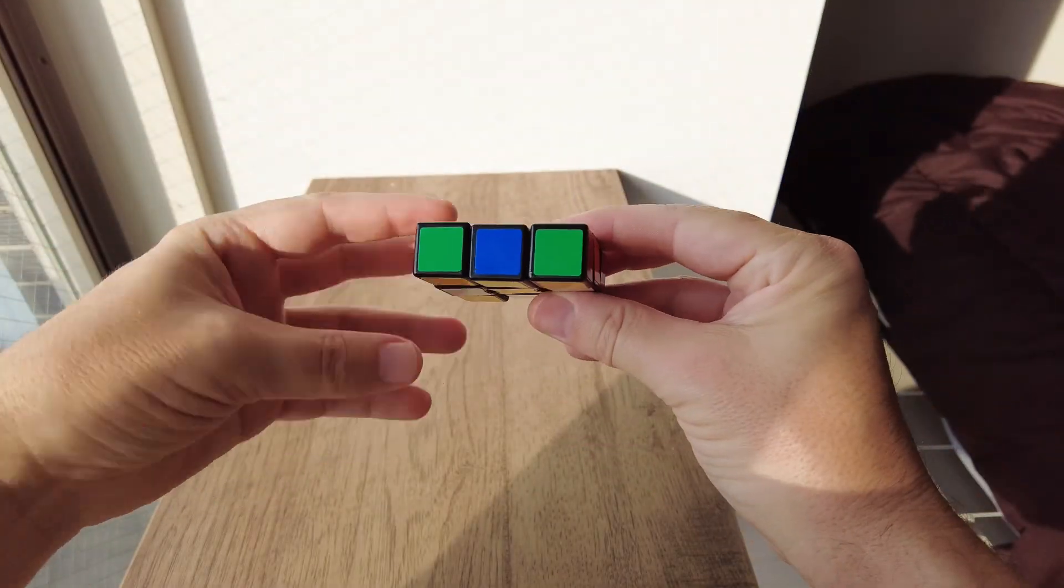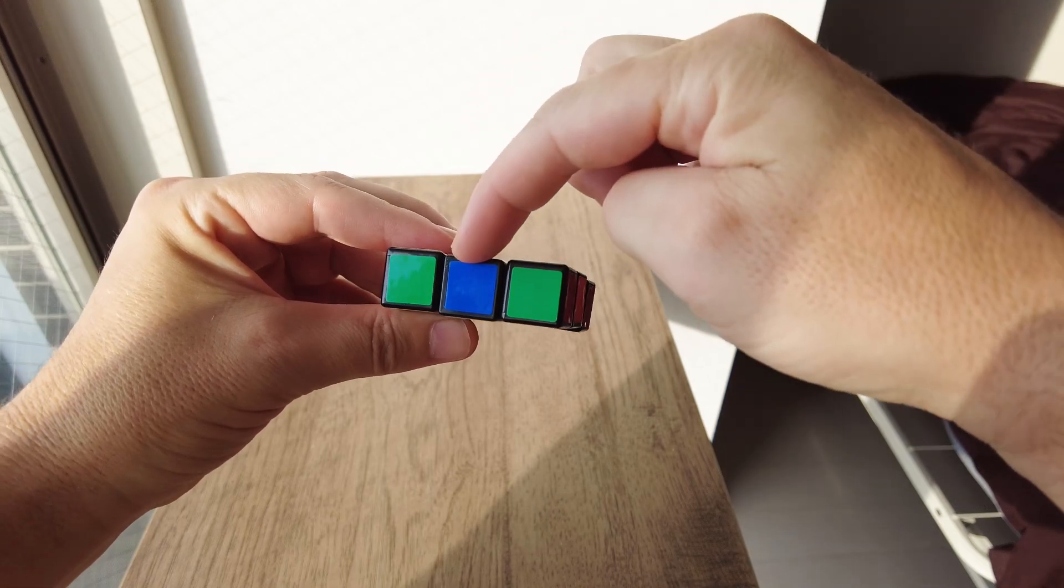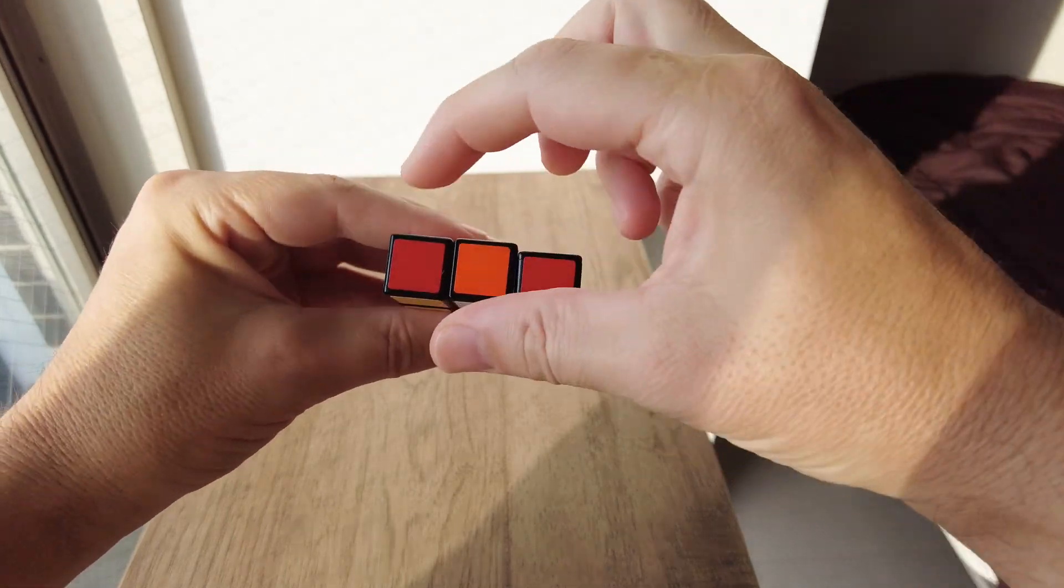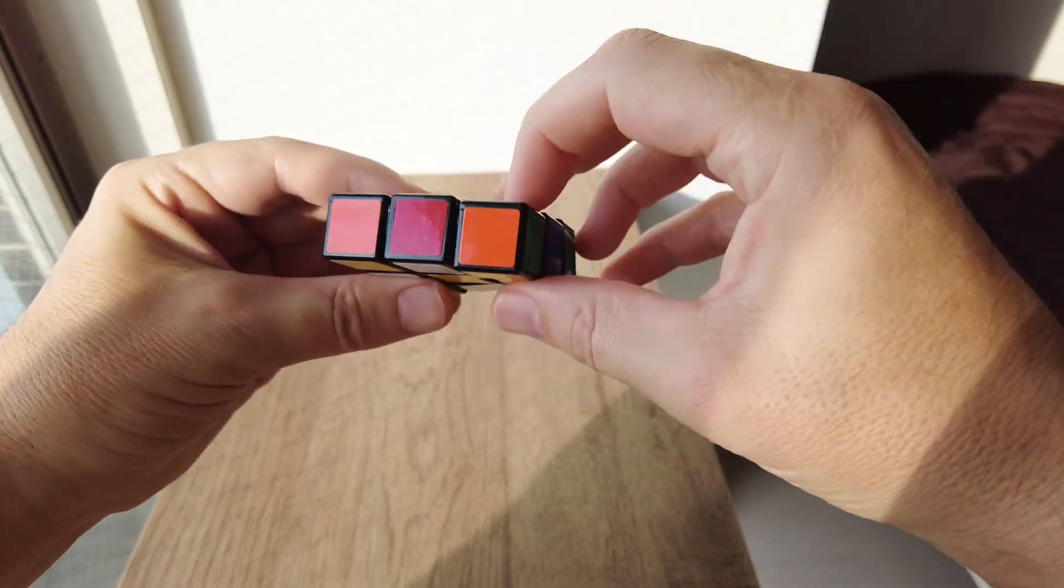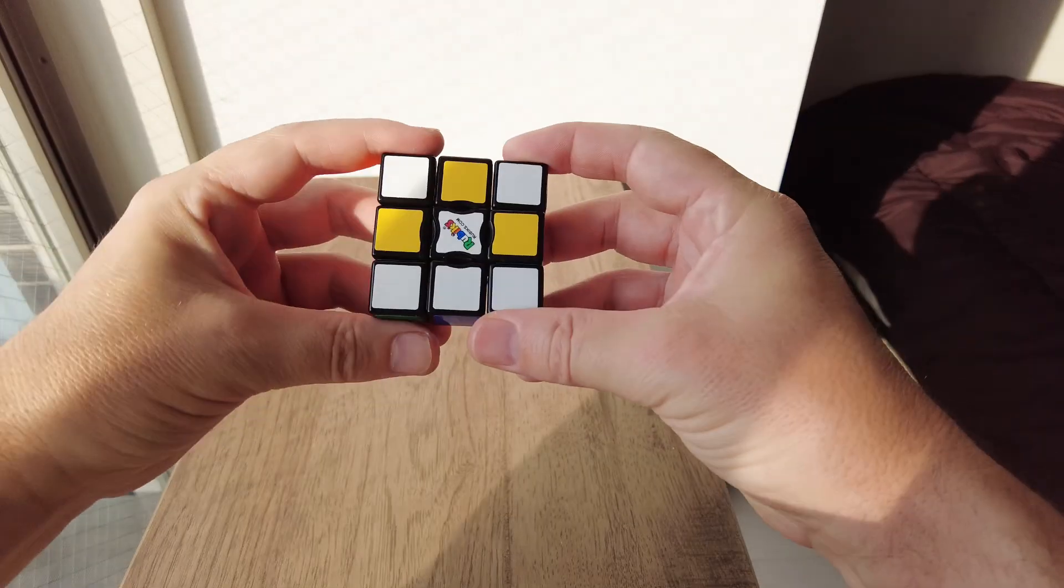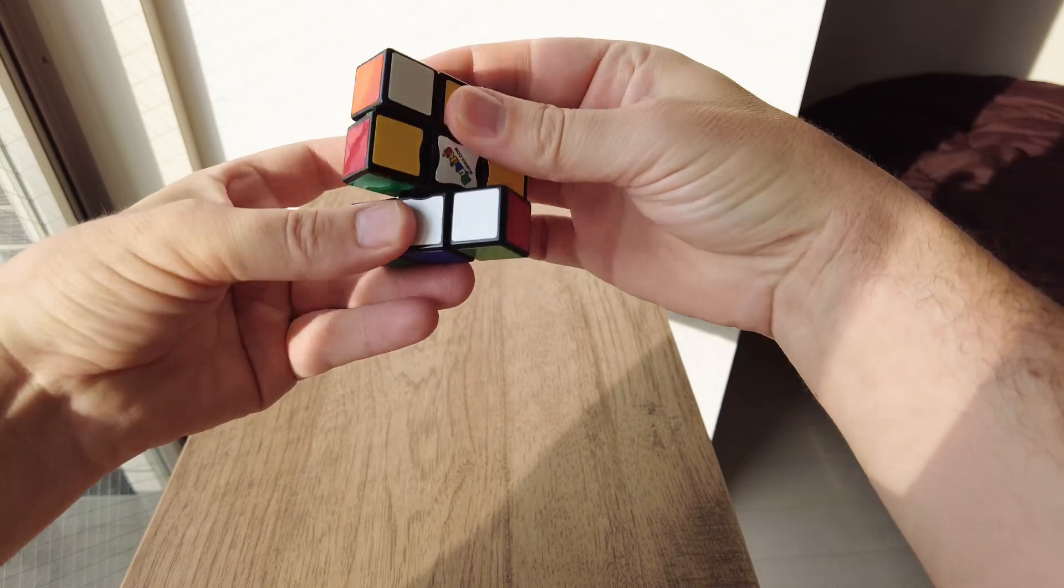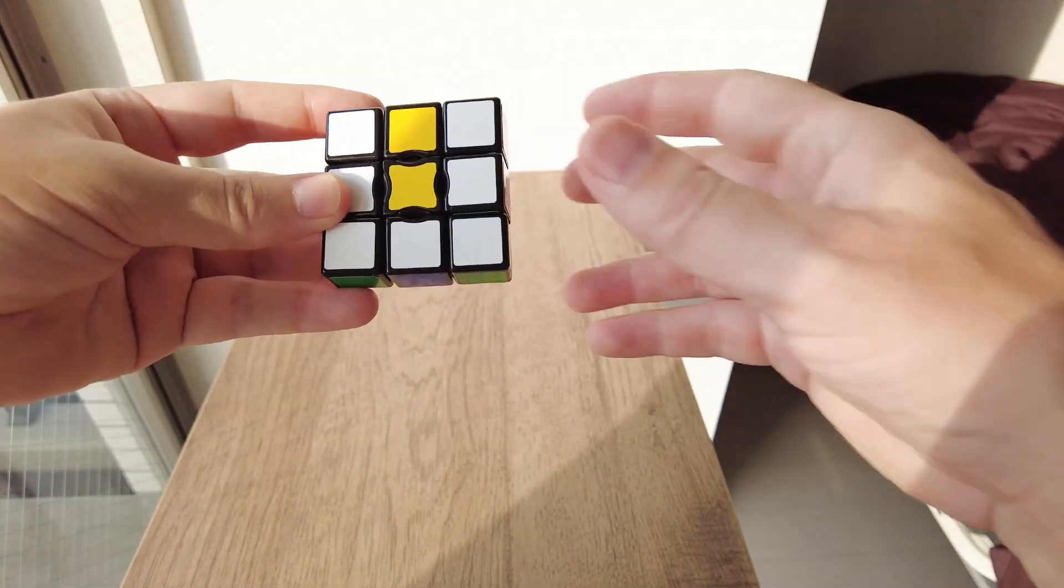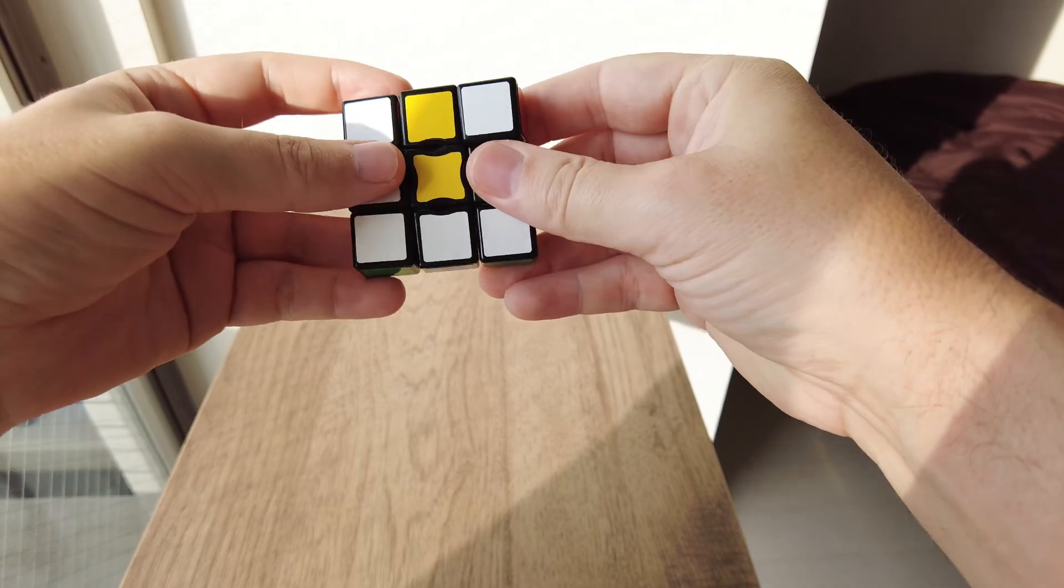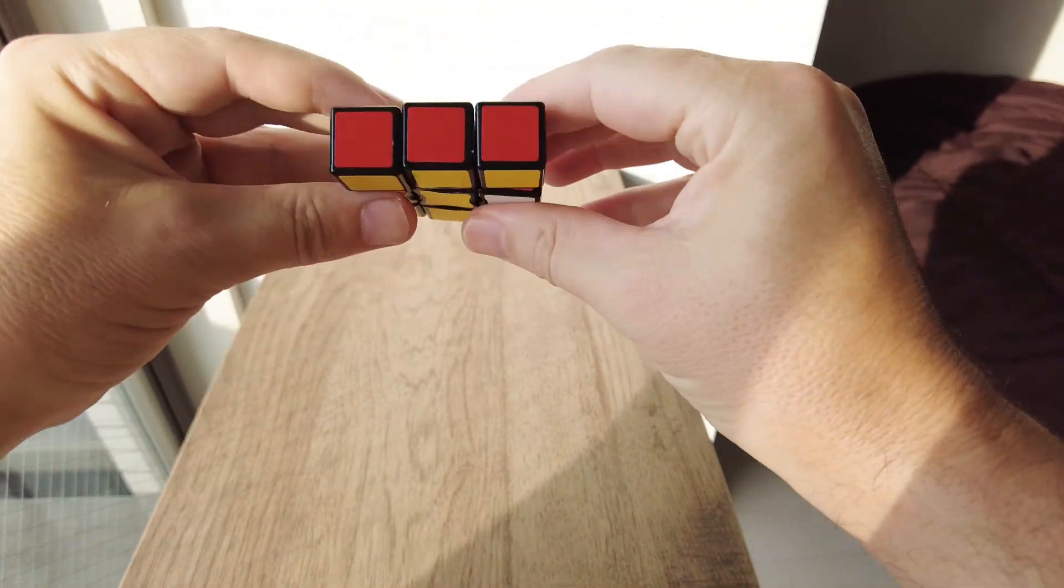The other case you might encounter is where you have one colour interspersed with another colour, like this, so blue, green, blue, orange, red, orange. So, to fix this, you choose the middle line, and you spin that 180 degrees, like that. And then you turn the middle line 180 degrees, as well. And that's fixed that.